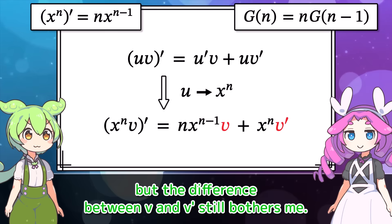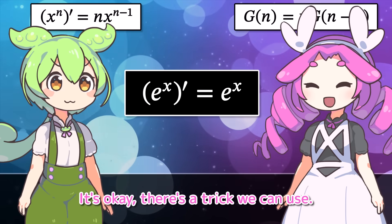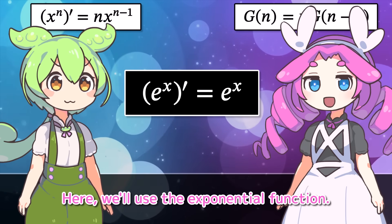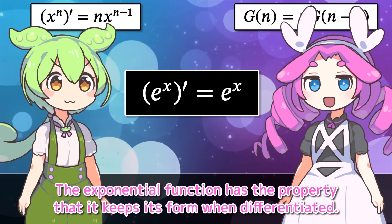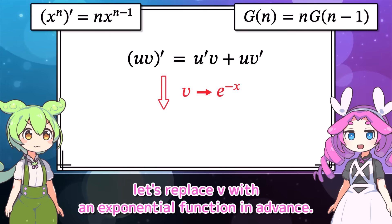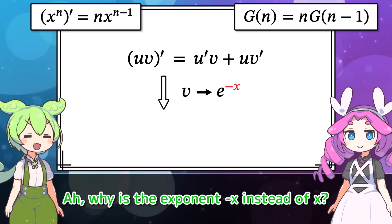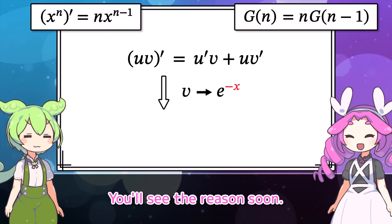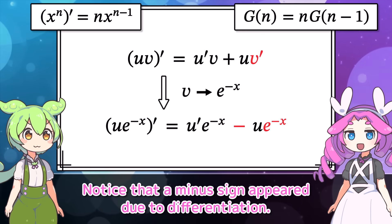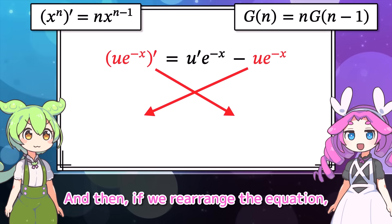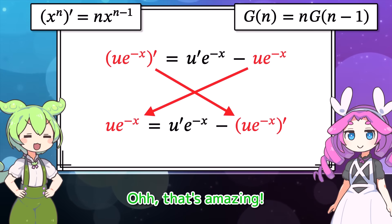The difference between v and v' still bothers me. Here, we'll use the exponential function. The exponential function has the property that it keeps its form when differentiated. So in the product rule, let's replace v with an exponential function in advance — specifically, e to the minus x. Notice that a minus sign appears due to differentiation. If we rearrange the equation, we get this. Here, u and u' are treated equally, although an extra term appeared, which we can handle later.